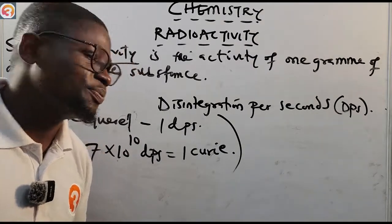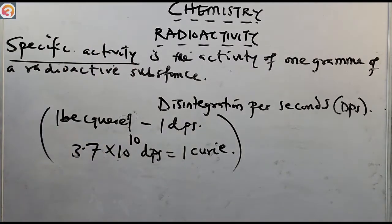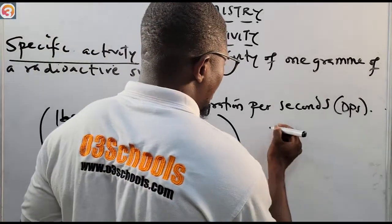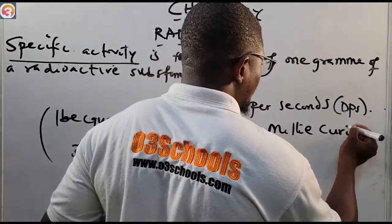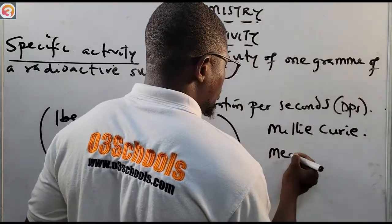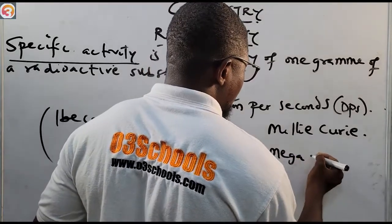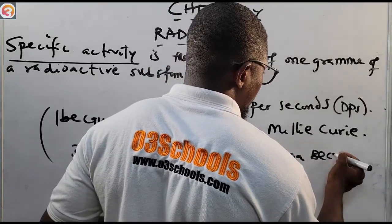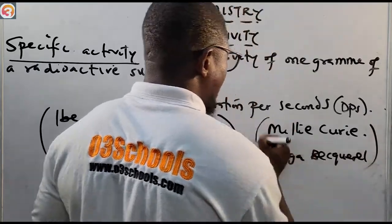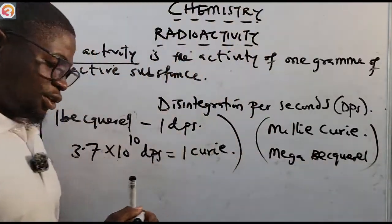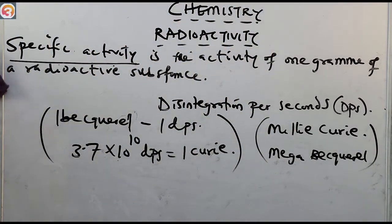There are other units used for measuring activity, for example the millicurie and the megabecquerel. These are other units used for measuring activity.